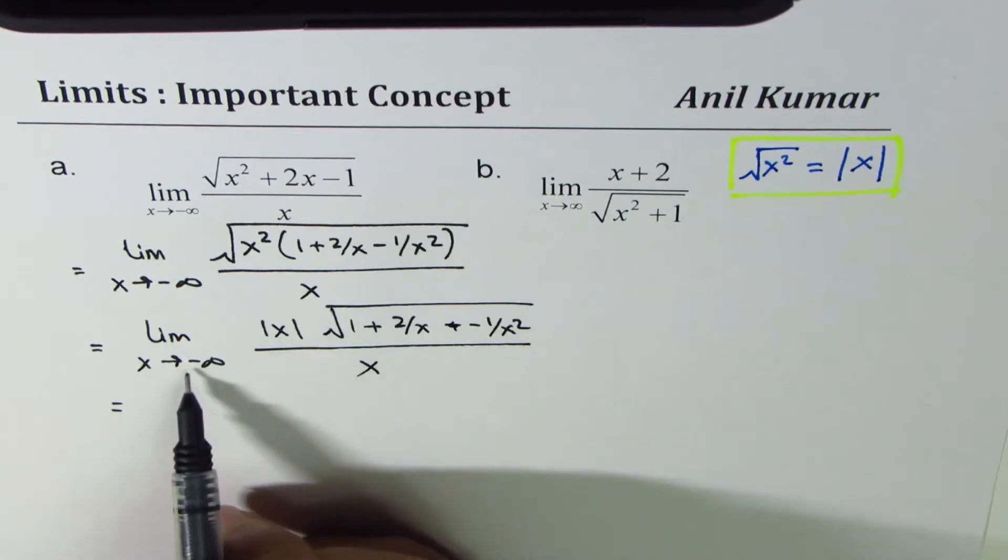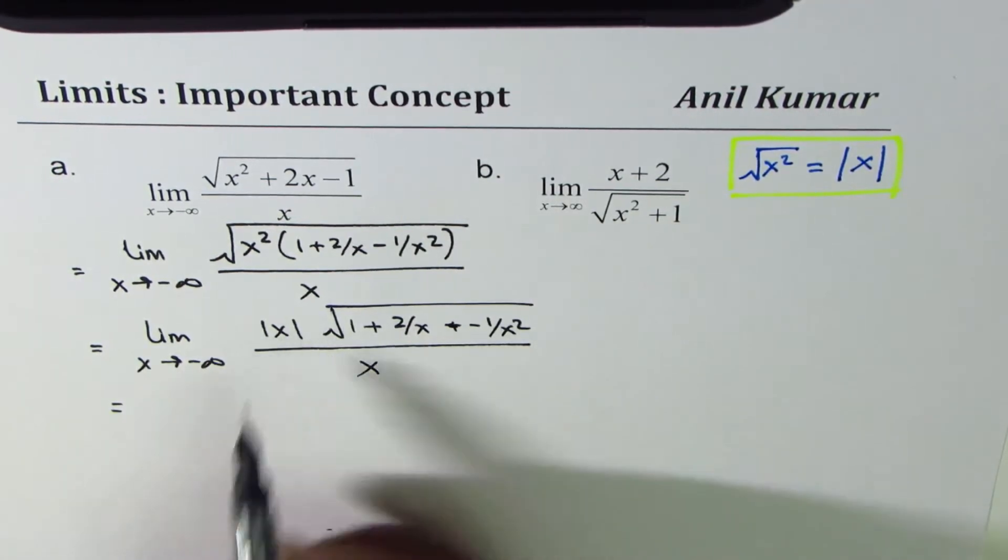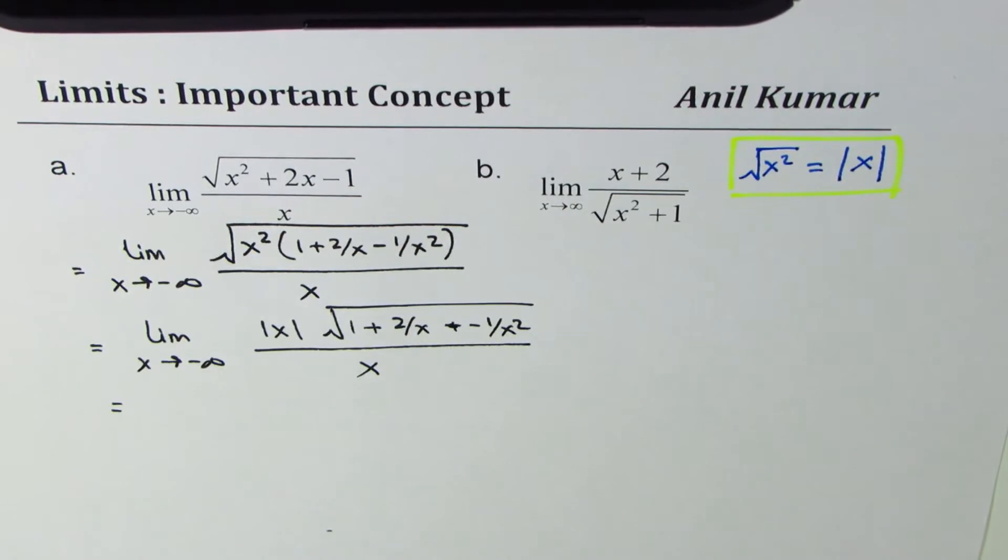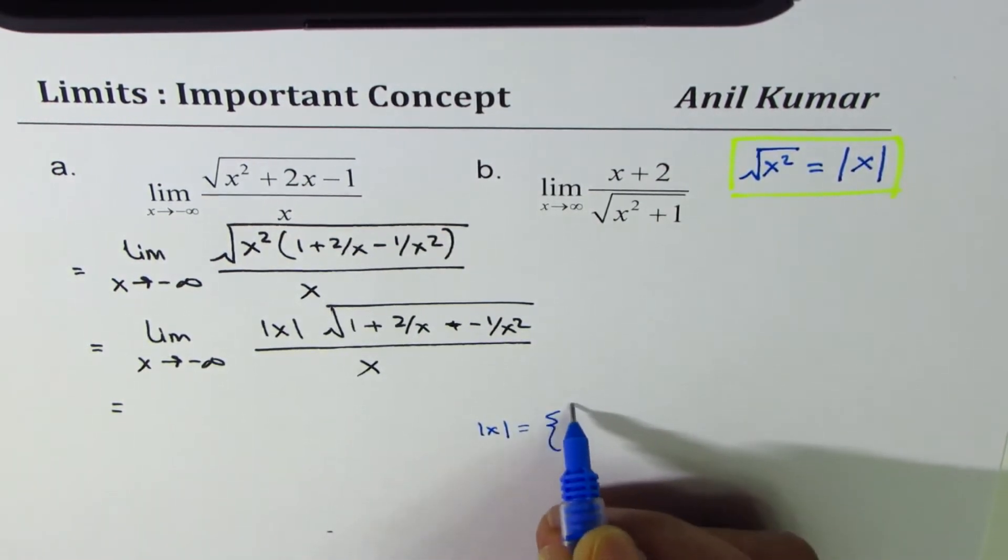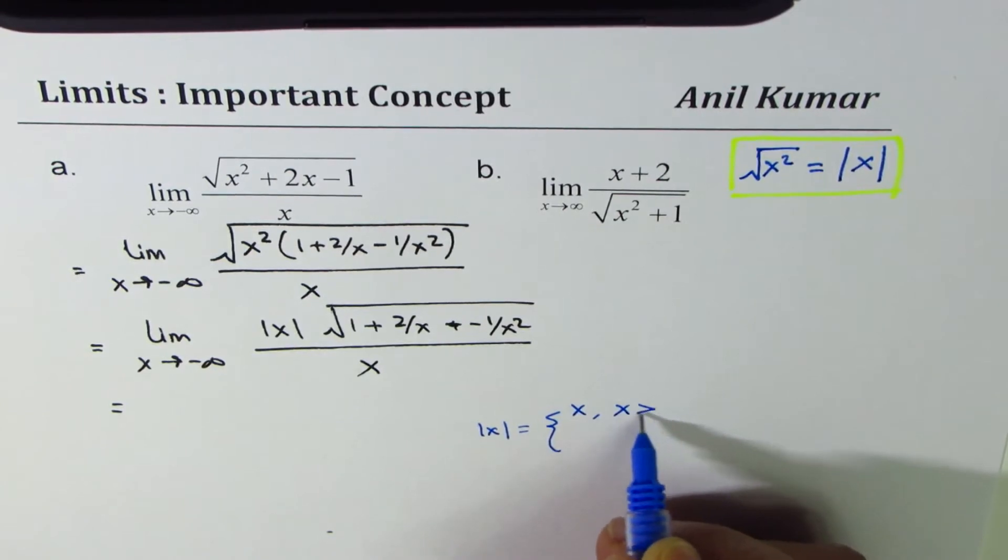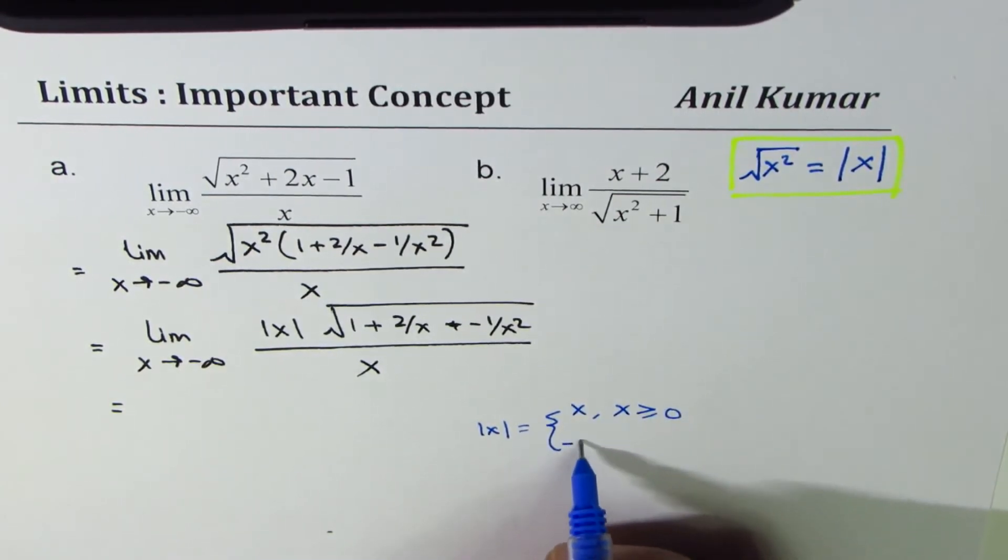Now as x approaches minus infinity, what is the value of absolute value of x? This is another very critical thing to understand. Absolute value of x is defined as x when x is greater than or equal to zero and minus x when x is less than zero.